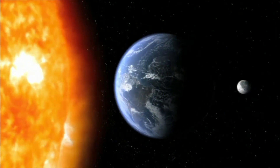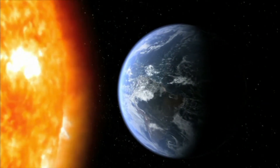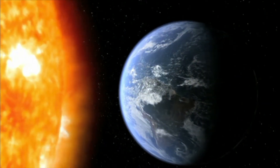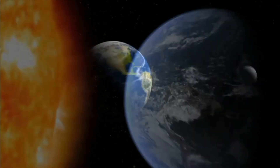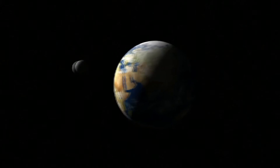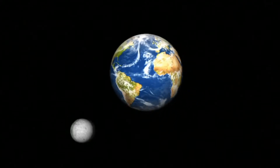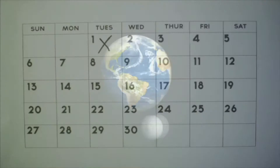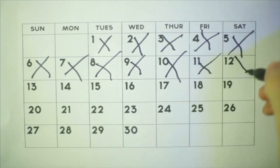While the Earth is revolving around the sun, the moon is revolving around the Earth. It takes the moon 28 days, or about one month, to make one revolution around the Earth. We measure our month based on the revolution of the moon around Earth.